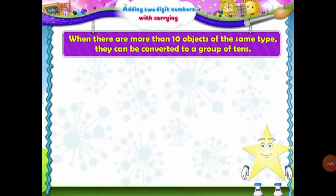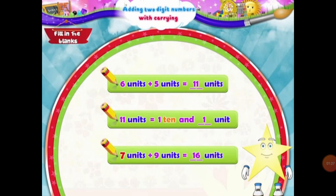Students, when there are more than 10 objects of the same type, they can be converted to a group of 10s — just as we have learned in the previous example of 19, that we had more than 10 units, so they can be grouped into a group of 10s and units. When we add 6 units and 5 units, what will be the answer? The answer will be 11 units.